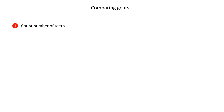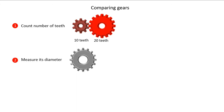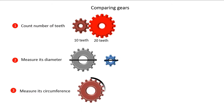Let's now look at how gears can be compared. The simplest and most common way is to count the number of teeth. A second way is to measure their diameter, and a third way is to measure their circumferences.